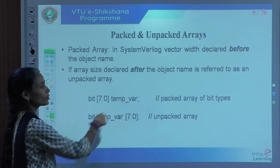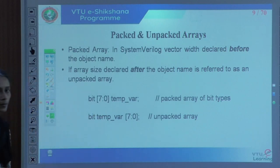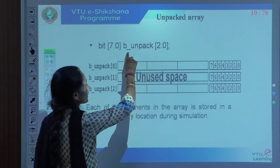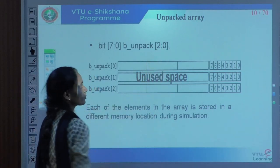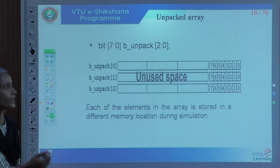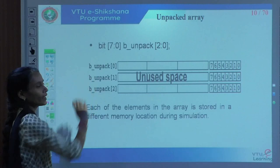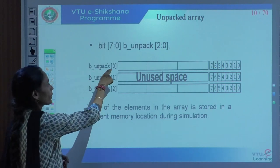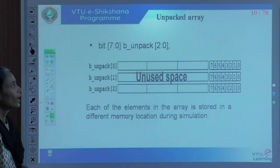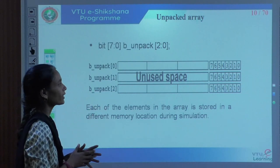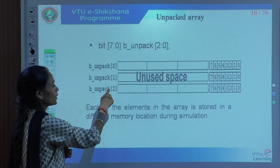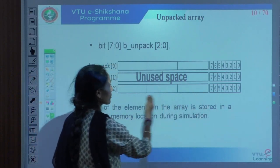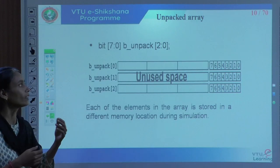For an unpacked array example: b_unpack is the array name with [2:0] meaning 3 arrays (indices 2, 1, 0) of each 8-bit. The total memory used is 32-bit per element — since it is unpacked, for each element b_unpack[0], b_unpack[1], b_unpack[2], a separate 32-bit register is allocated to store the 8-bit value. The rest of the MSBs are unused, meaning each element is stored in a different memory location during simulation.